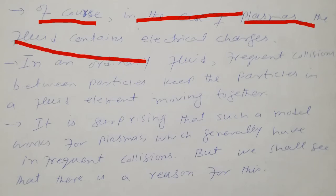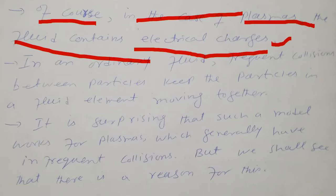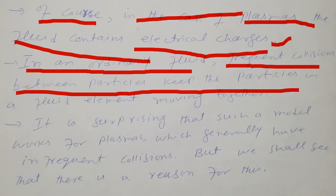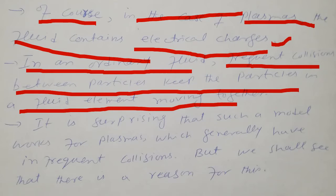Of course, in the case of plasmas the fluid contains electrical charges — it consists of electrons and ions, so we say plasma is an electrical gas. In an ordinary fluid, frequent collisions between particles keep the particles in a fluid element moving together.